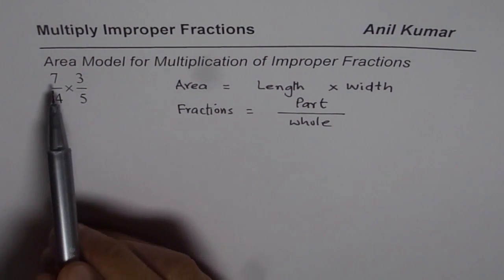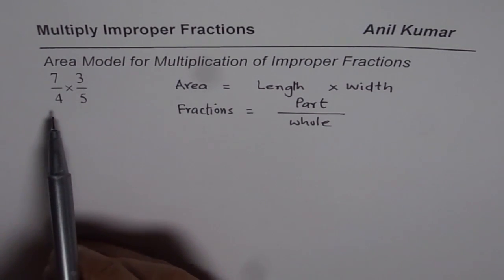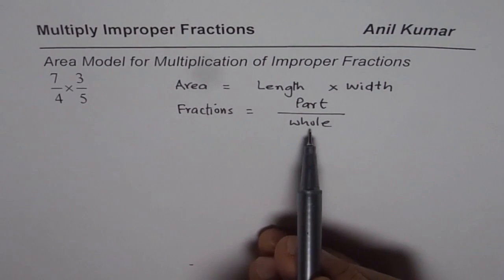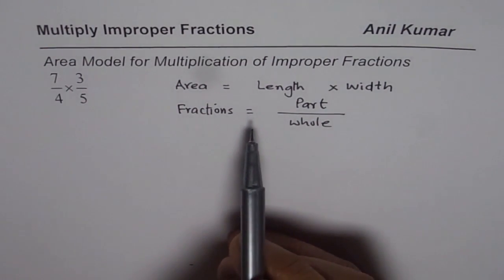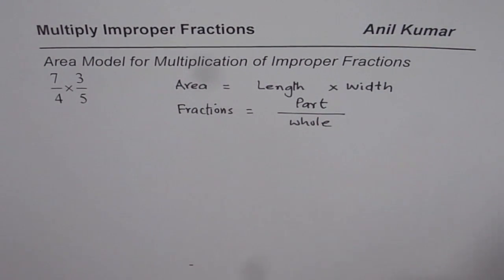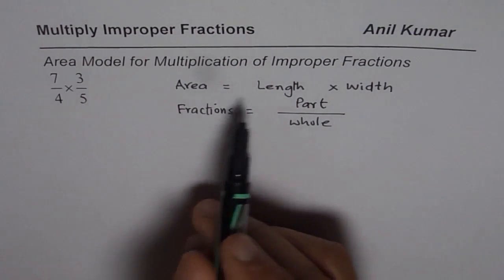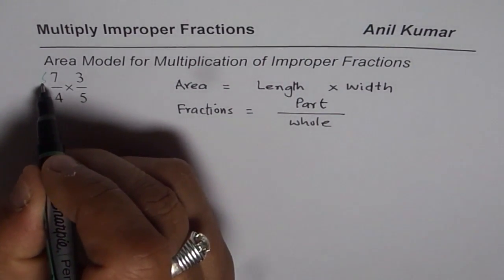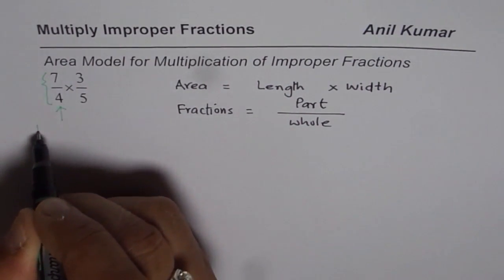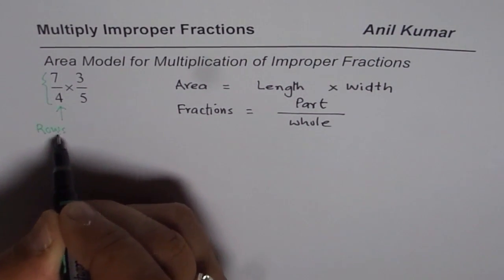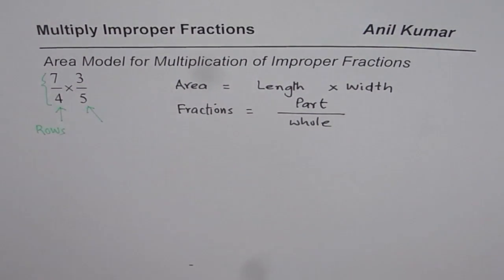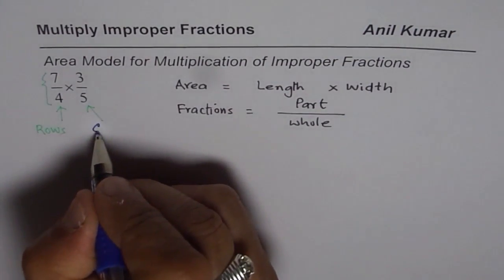So let us see how to represent 7 over 4 as a fraction part of whole and then we will see area. Now as the name suggests, we are looking into area. We will consider one side as rows and this as columns. So we have columns and rows.